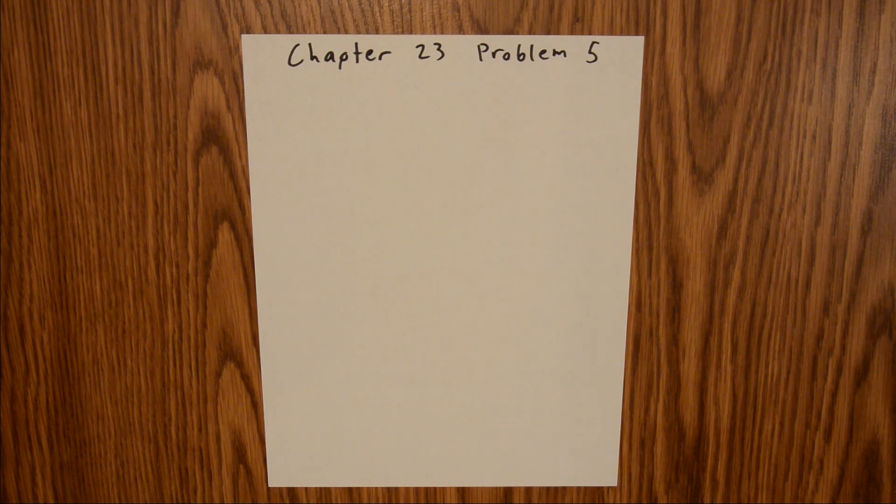Chapter 23 is all about Gauss Law, and in Problem 5, we're told that a point charge is at the center of a cubicle Gaussian surface, and we're asked to find the net electric flux through the surface.